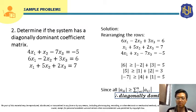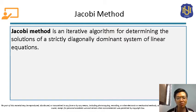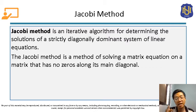Let's discuss the first iterative method: the Jacobi method. The Jacobi method is an iterative algorithm for determining solutions of a strictly diagonally dominant system of linear equations. It is a requirement that the system be diagonally dominant. It is a method of solving a matrix equation on a matrix that has no zeros along its main diagonal — so no element in the principal diagonal can be zero.